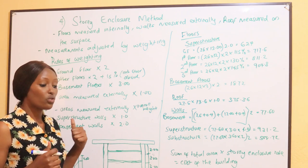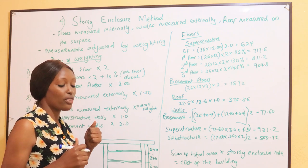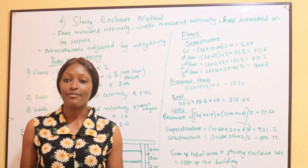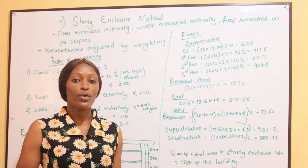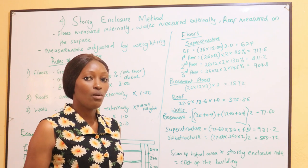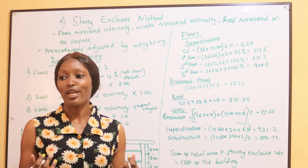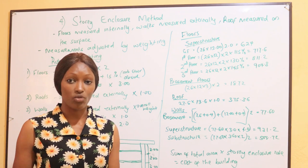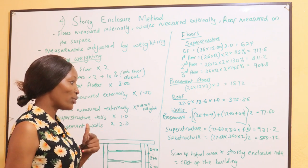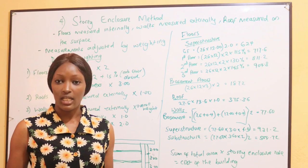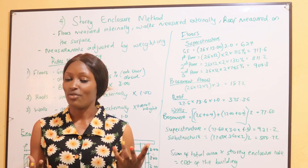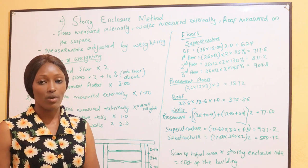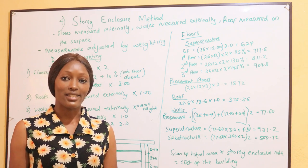Something else to note about the story enclosure method is that we use weighting. Weighting is where we apply a factor. We find the floor areas multiplied by a factor, go to the roof and find the area multiplied by a factor — that is called weighting. Then we go to the walls, find the perimeter, and when we find the area of the walls we multiply by a factor. We shall do an example.